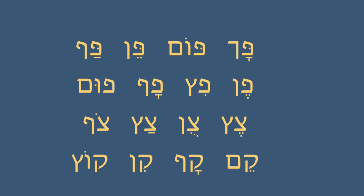One more, mixing things up a little bit more. First line: Pach, pome, pain, paf. Second line with our Fes: Fenn, feets, faf, and fum. Third line with our Tsadis: Tzets, tzun, tzatz, tzof. And the final line with our Kufs: Kame, kaf, keen, and coats.